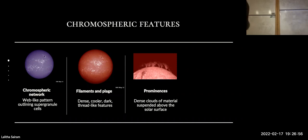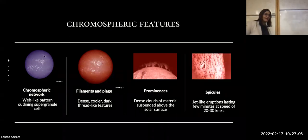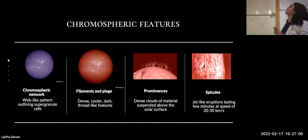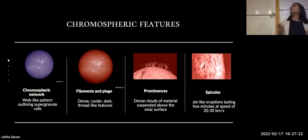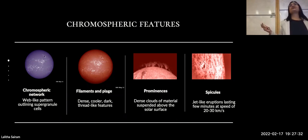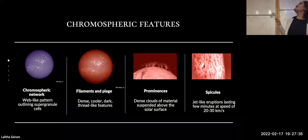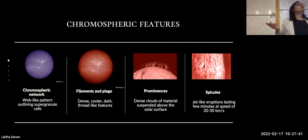Prominences are essential workhorses for what happens in the corona. The last chromospheric feature I want to speak about is spicules — jet-like features that keep popping up on the Sun. I look at them like a disco light, just constantly throwing out some light. We do not know what causes them yet. Despite having so much resolution and data, what triggers them is still not well understood.